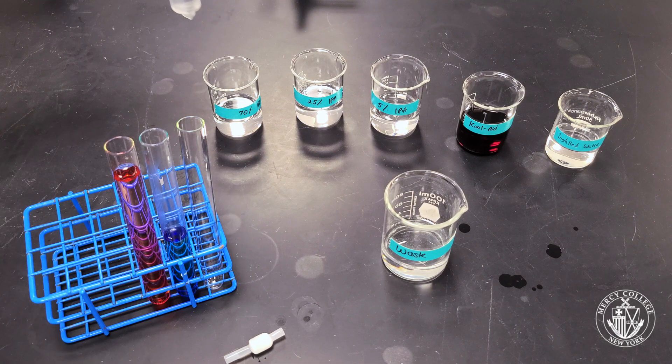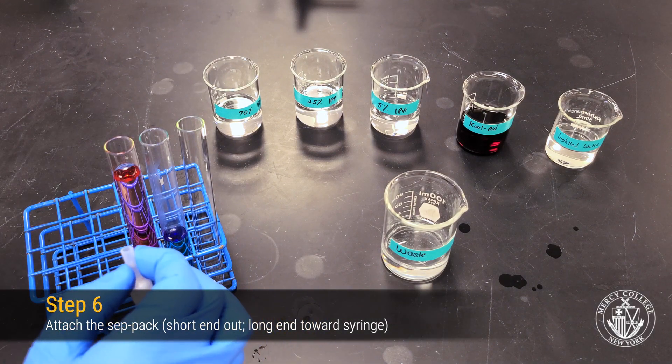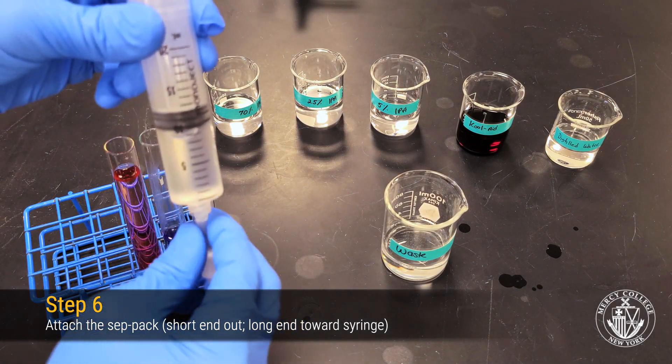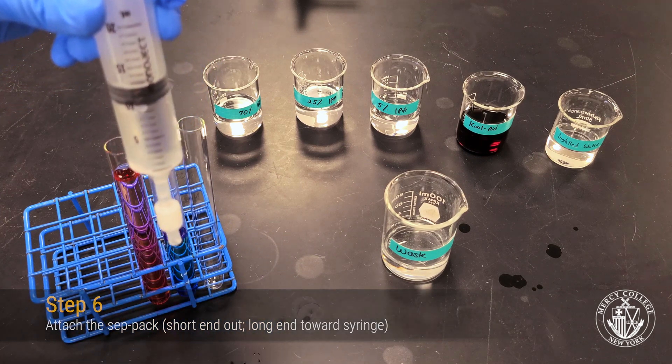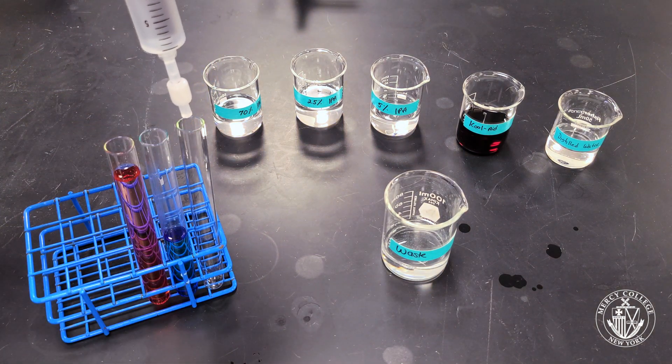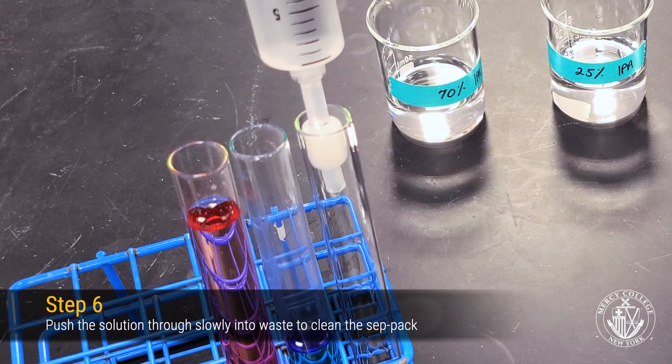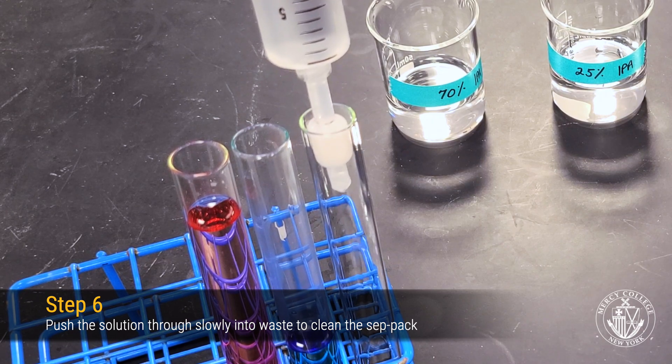Now reattach the CEPPAC column to your syringe and push the 70% IPA through into waste or into another test tube. If you've successfully removed both dyes from the column, the solution should come through clear.